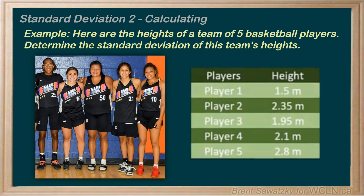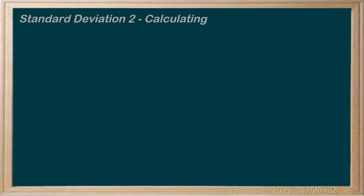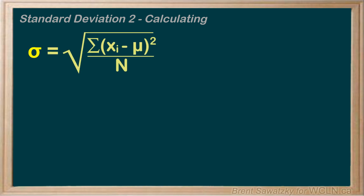Here are the heights of a team of five basketball players. The first step is to determine which formula to use. Since we have all of the data for the team — all five players from a team of five — we'll use sigma to show that we're using the entire population in this calculation. Here's the sigma, or total population, formula that we'll be using.